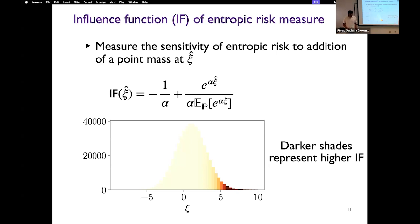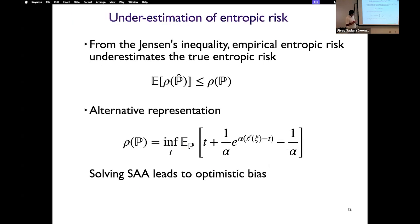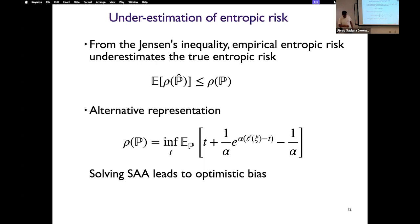Can we add corrections to our data so that we can correct the entropic risk? We will see some procedures which try to correct the bias. Another way to see this bias is using Jensen's inequality, which says that the empirical entropic risk underestimates the true entropic risk. Another alternative representation of the entropic risk is as the solution of an optimization problem. You obtain this entropic risk by solving this problem. If you replace p with p-hat, you will see that rho of p-hat will underestimate the true risk. This is due to the fact that solving an SAA problem leads to an optimistic bias. These are three ways to see the underestimation issue that can arise when using limited data to estimate the entropic risk.